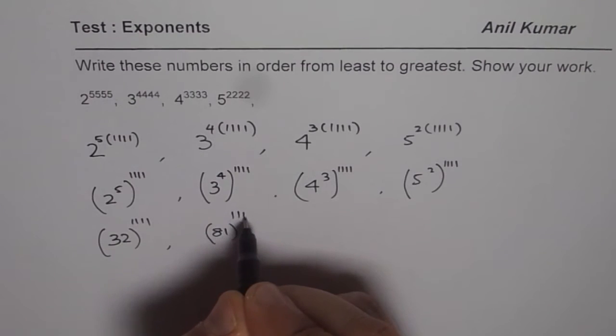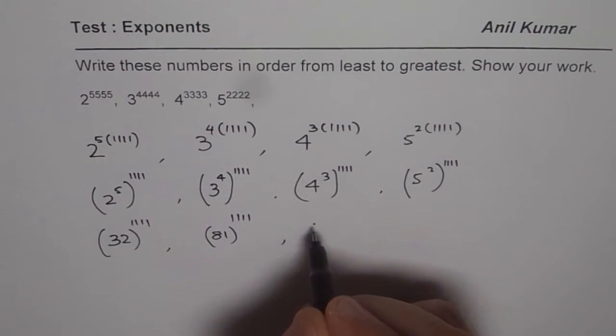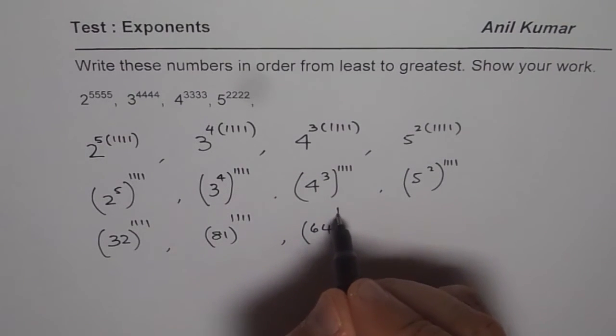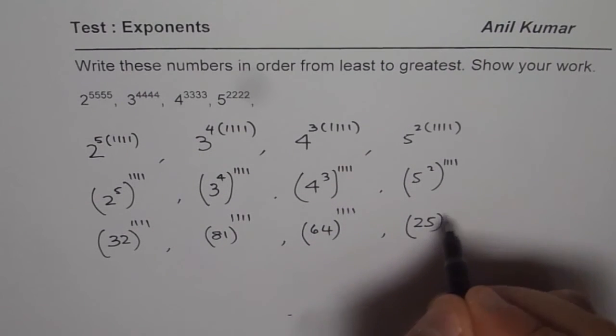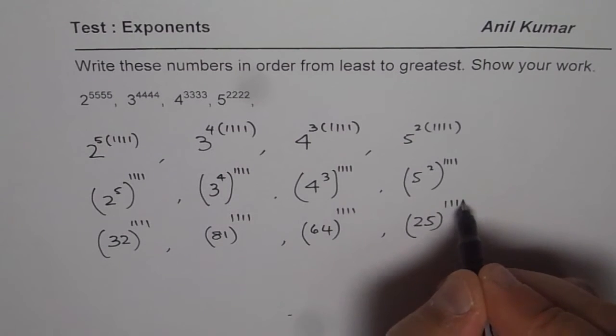And we have 4 to the power of 3. 4 times 4 is 16 times 4, 64 to the power of 1111. And this is 25 to the power of 1111.